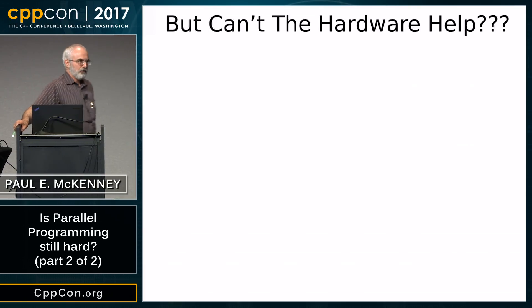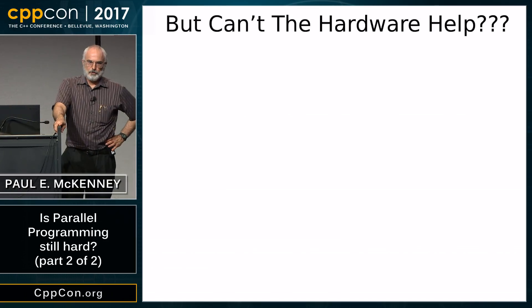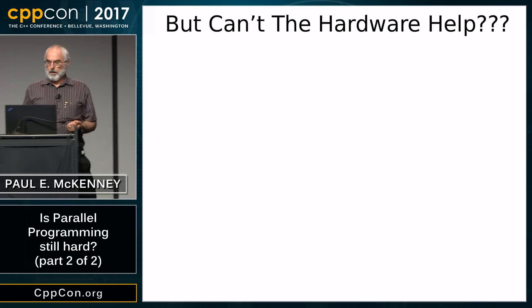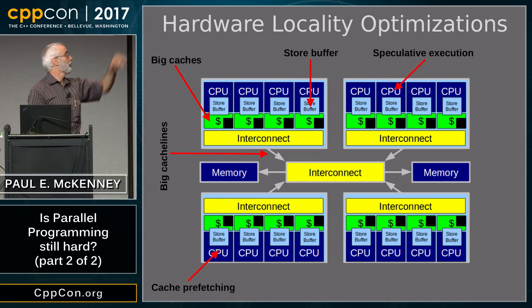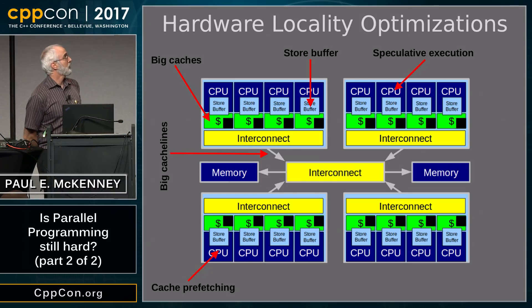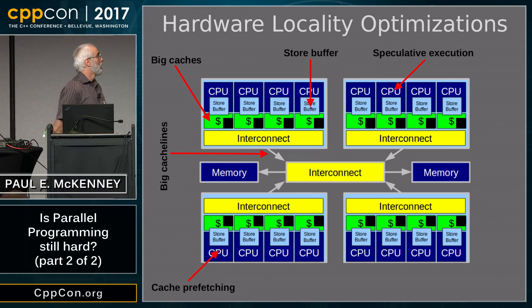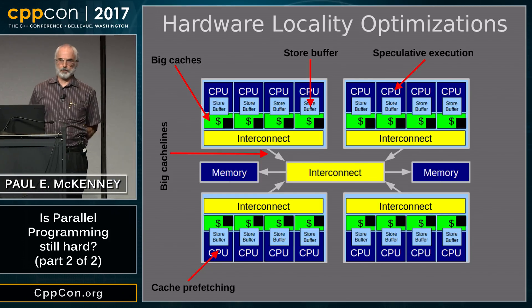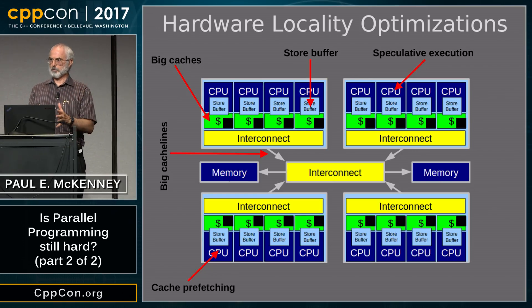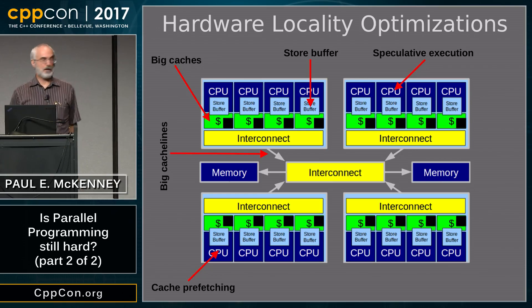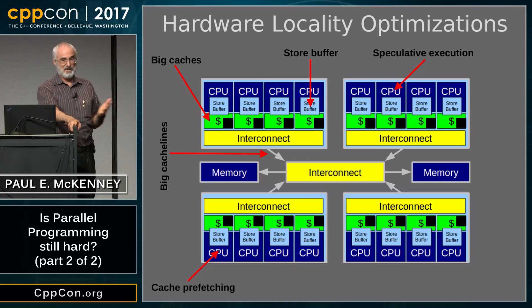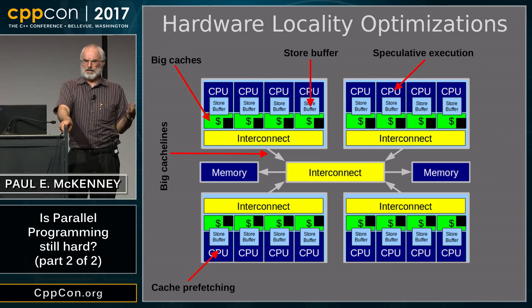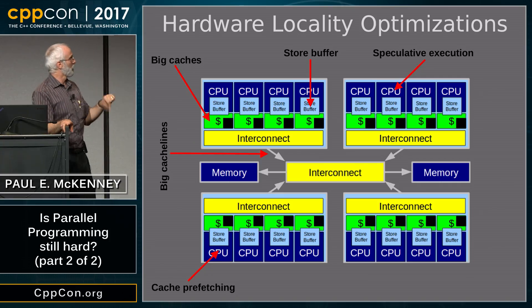One question is: with all these transistors, can't the hardware help us? In fact it does quite a bit. Here are five of the larger optimizations it does: big caches — which have grown from small kilobytes to many tens of megabytes — store buffers, speculative execution, big cache lines, and cache prefetching. Big cache lines are kind of a two-edged sword, and in fact many of these optimizations are. Cache prefetching is another one that can be very good or very bad.